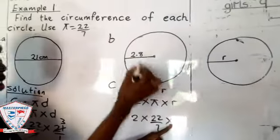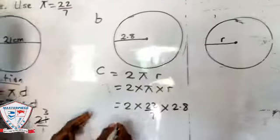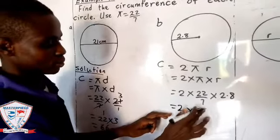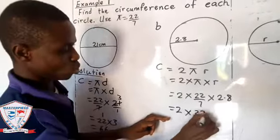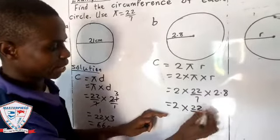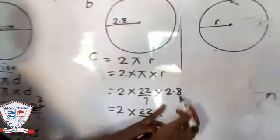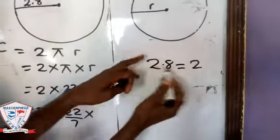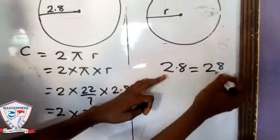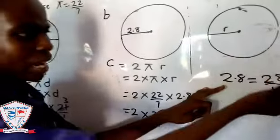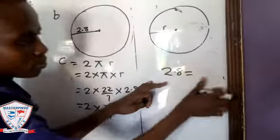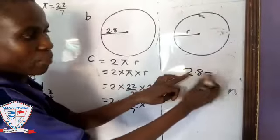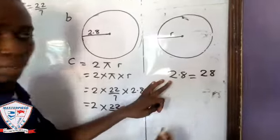So you have 22/7 times - now this radius is 2.8. So you continue here: you say 2 × 22/7 times - now this 2.8, you can change it to a fraction. If you have 2.8, it's the same thing as 28/10. How did I get that? Let me explain it to you.